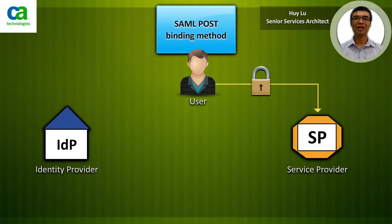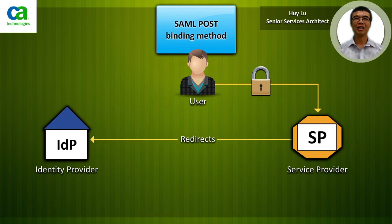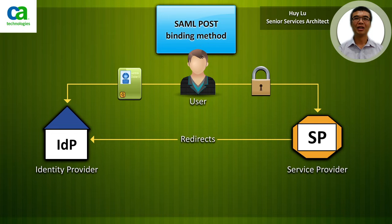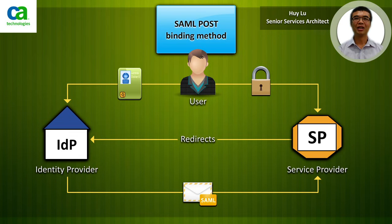In step 1, the user requests a resource from the service provider. As the user is not logged in, in step 2 the service provider redirects the user to the identity provider for authentication. In step 3, the user then provides the authentication credentials and successfully logs on to the identity provider. In step 4, the identity provider then returns a page that posts the SAML assertion to the service provider.